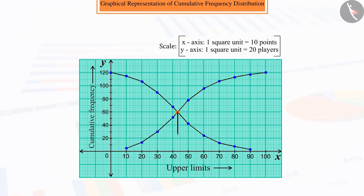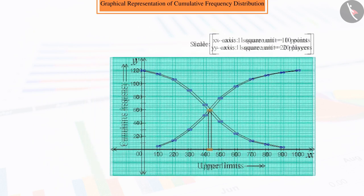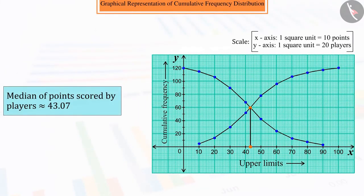From this point, let's draw a perpendicular on the x-axis. The point at which the perpendicular drawn intersects the x-axis is the median of the data. Therefore, we can say that the median of the numbers obtained by the players is 43.07.